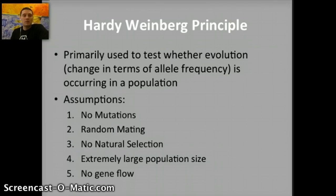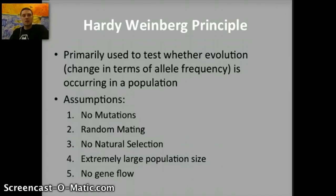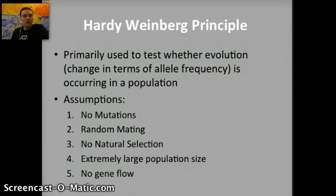Mutations do happen. There is some selection in mating — sexual selection, for example. Populations are not always large, and there's definitely natural selection. Because those five assumptions are usually not met in populations, most populations are changing. Given environmental changes or other factors, it causes the population to change. By measuring the frequencies of different alleles and basing it off these five assumptions, we can see if a population is changing, and if so, how much in terms of allele frequency.